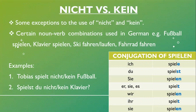Now there are certain noun and verb combinations used in the German language for which we can use both 'nicht' and 'kein'. These noun-verb combinations include: 'Fußball spielen' — to play football, and 'Klavier spielen' — to play the piano.